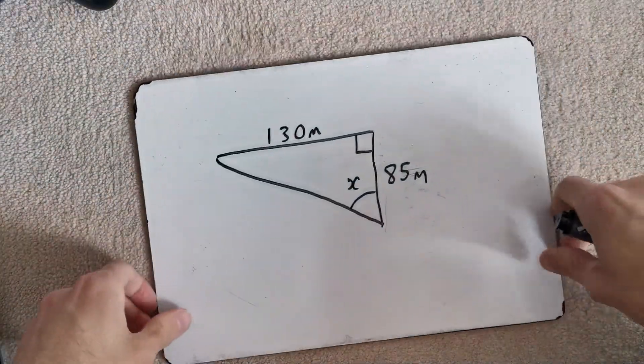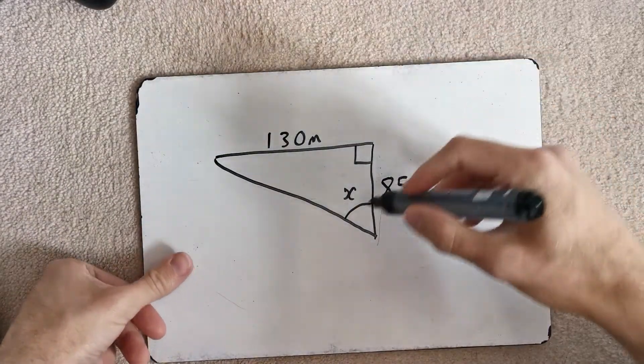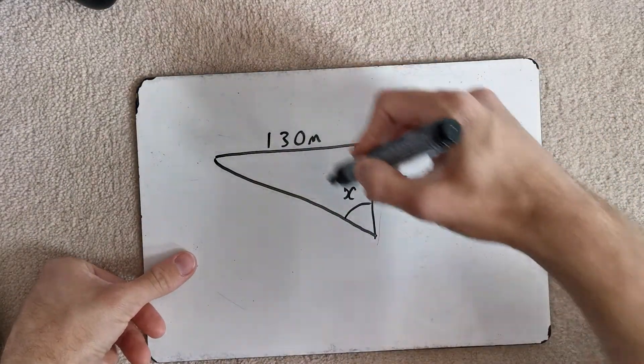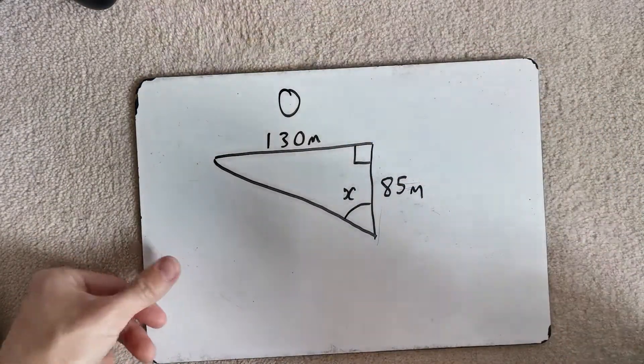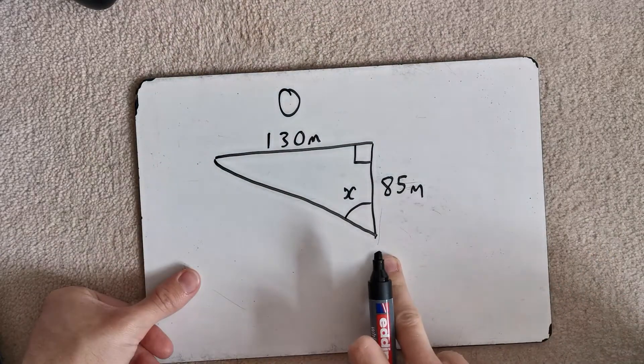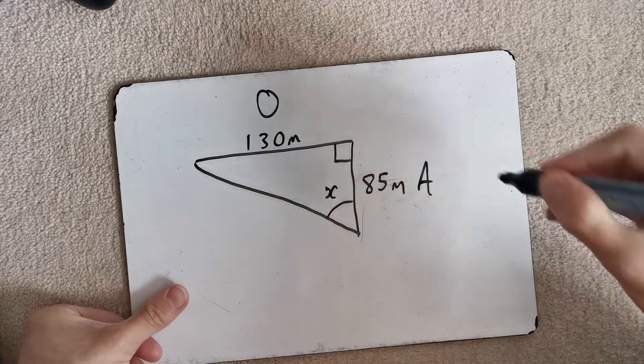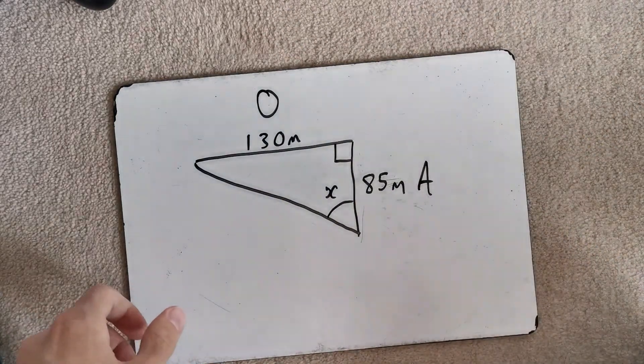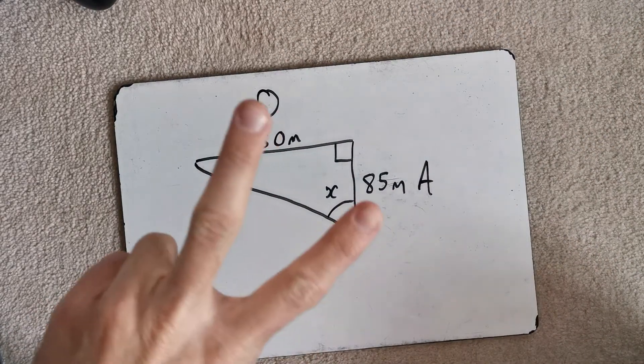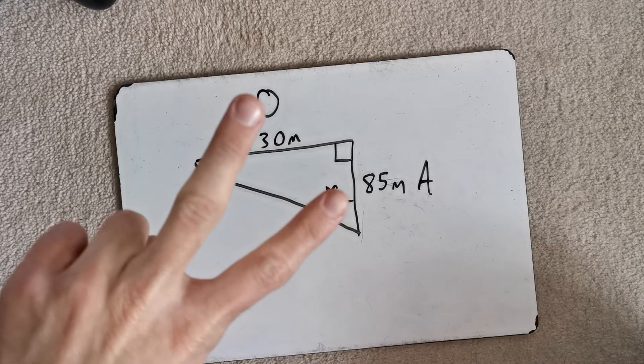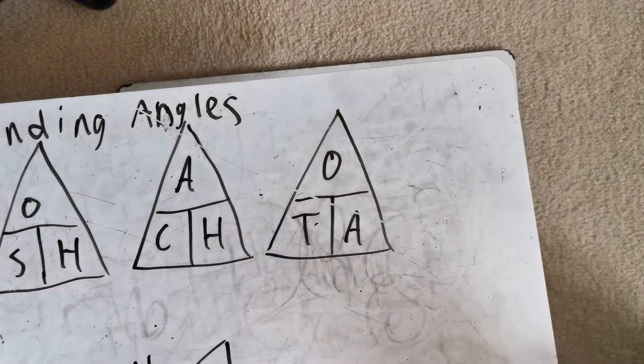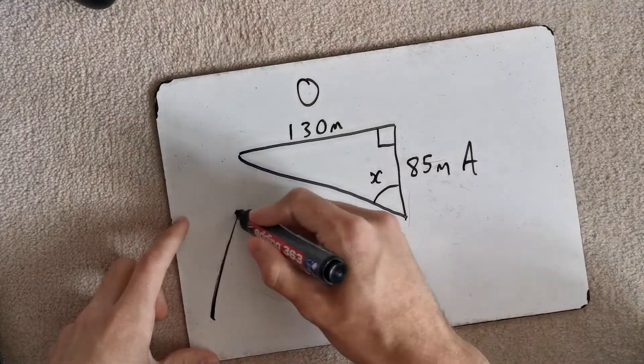So again, step one, label the sides. What's this one? That's opposite the curvy angle. That's the O. Nothing on this one. Don't need to worry about it. This one is next to both of the angles. There's our adjacent. Step two. What's step two? Have a think. Yes, it is. Work out which one of these we're going to use. O and A. We've got O and A. We're going to be using tan.